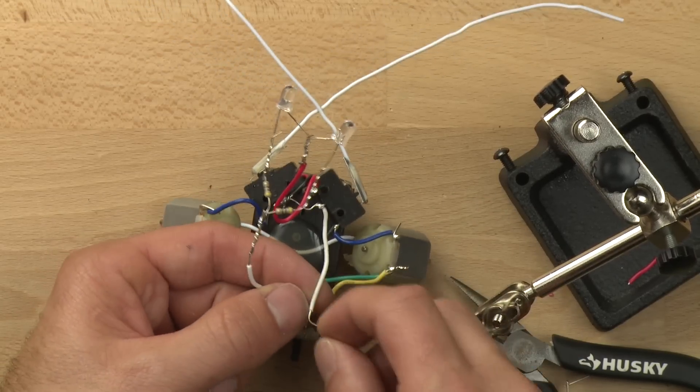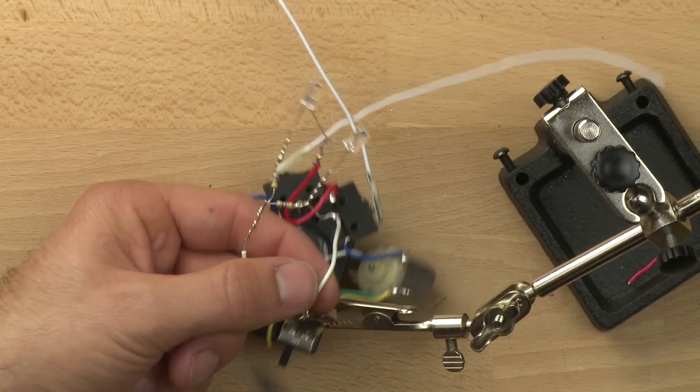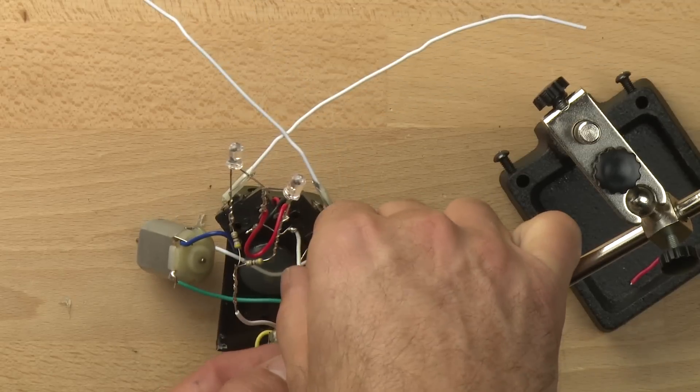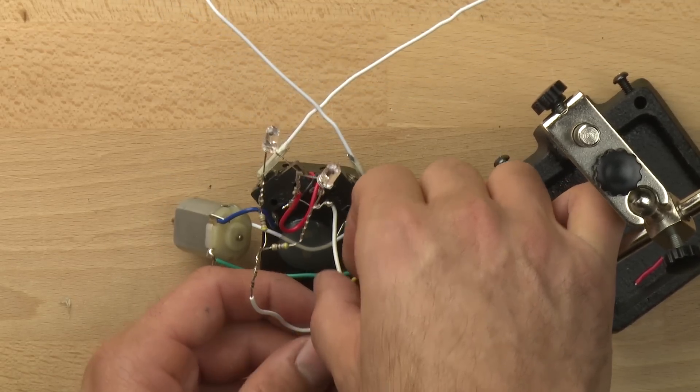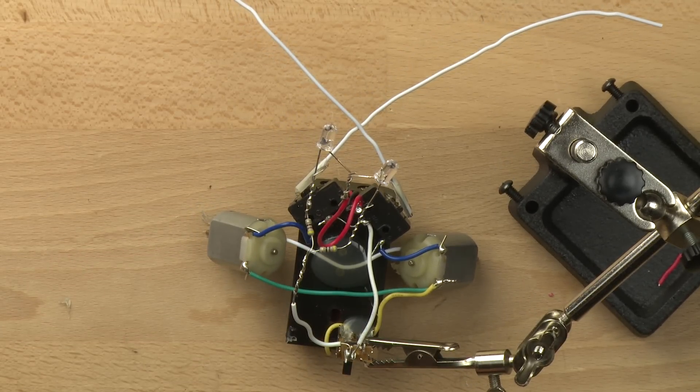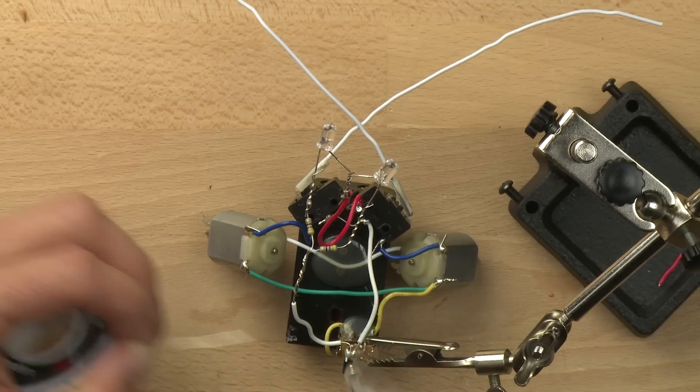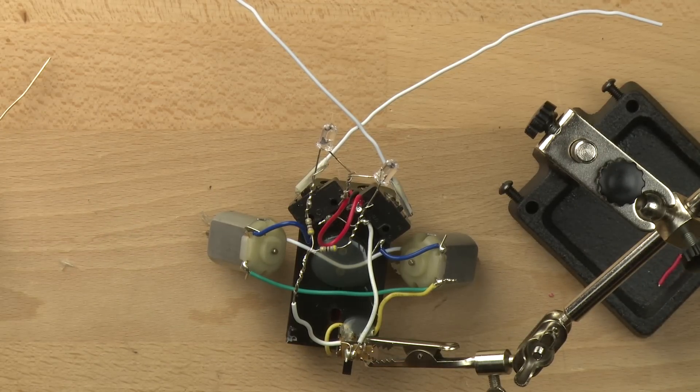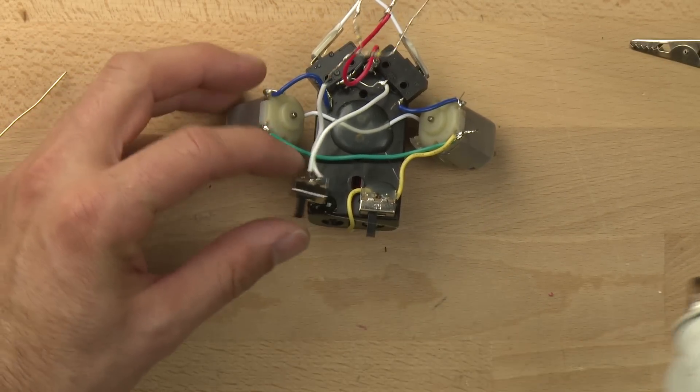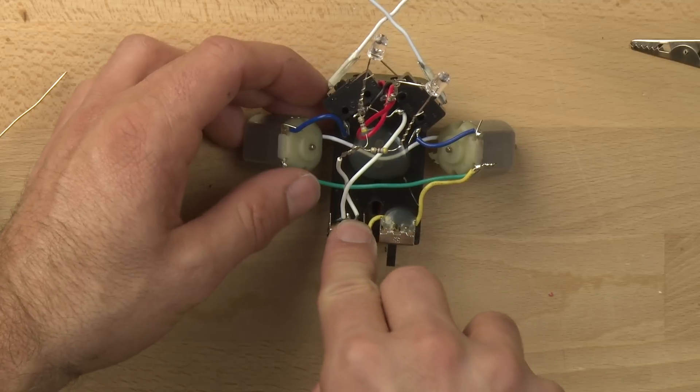And we're going to get our needle nose here and see if we can't get this all wrapped up. There we go. Now we're going to put down just a little bit of hot glue underneath it. Right here like that.